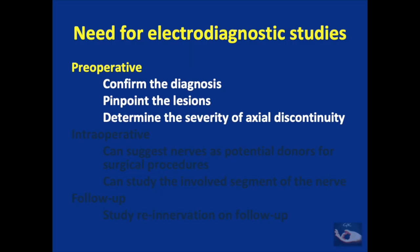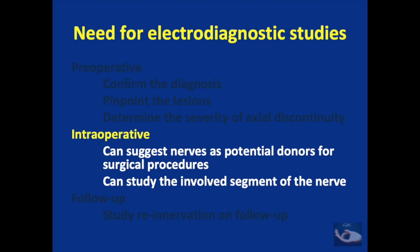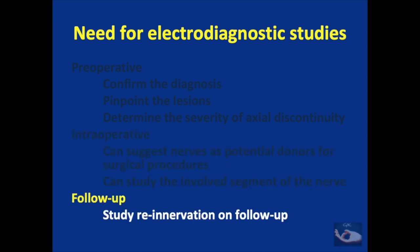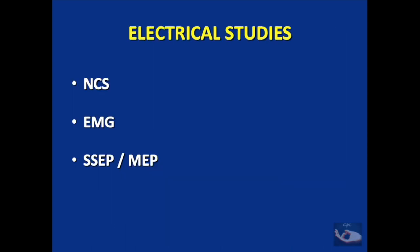The need for electrodiagnostic studies is manifold. Pre-operatively they help confirm the diagnosis, pinpoint lesions and determine the severity of axonal discontinuity. Intraoperatively, electrophysiological studies can suggest nerves as potential donors for surgical procedures and can study involved nerve segments where there is doubt. Post-operatively, after brachial plexus surgery or during follow-up, electrophysiological studies help evaluate re-innervation of the upper limb. The main types are nerve conduction studies, needle electromyography and somatosensory or motor evoked potentials.